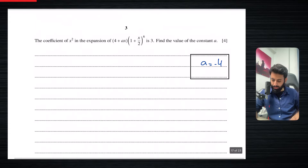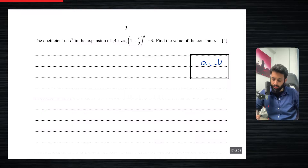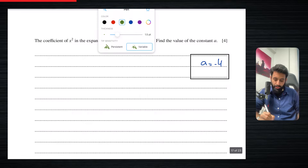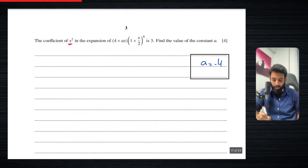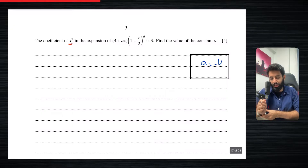This question says: the coefficient of x squared in the expansion of (4 + ax) multiplied by (1 + x/2) to the power six is 3. Find the value of the constant a. So what you're really looking for is the coefficient of x squared, and it's not just one expansion — it's an expansion which is then multiplied by (4 + ax). So this requires a bit of thinking.